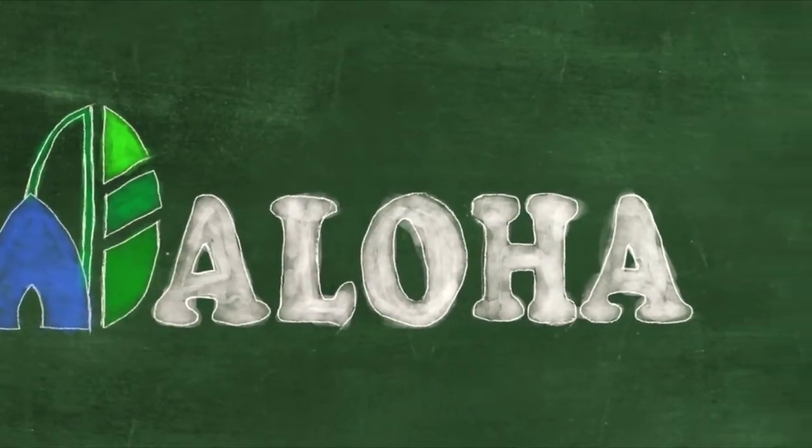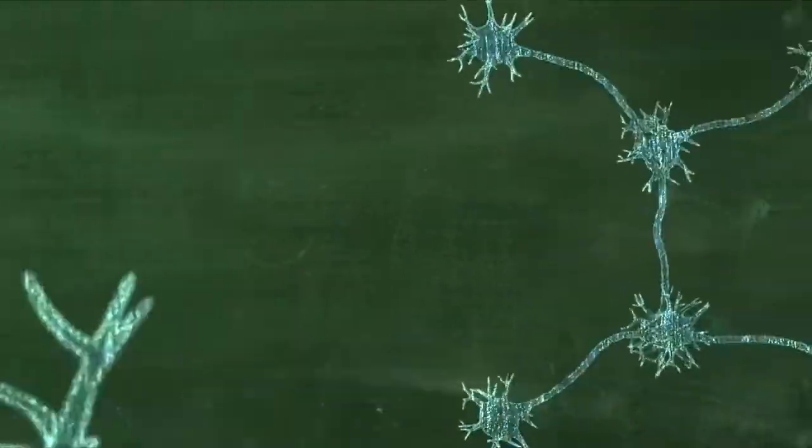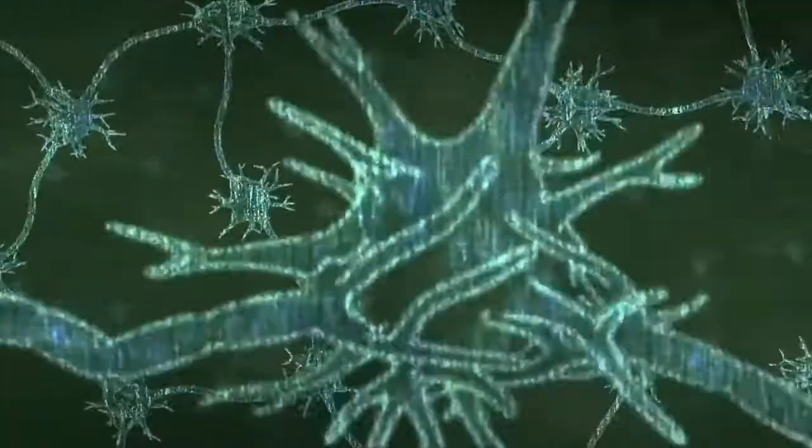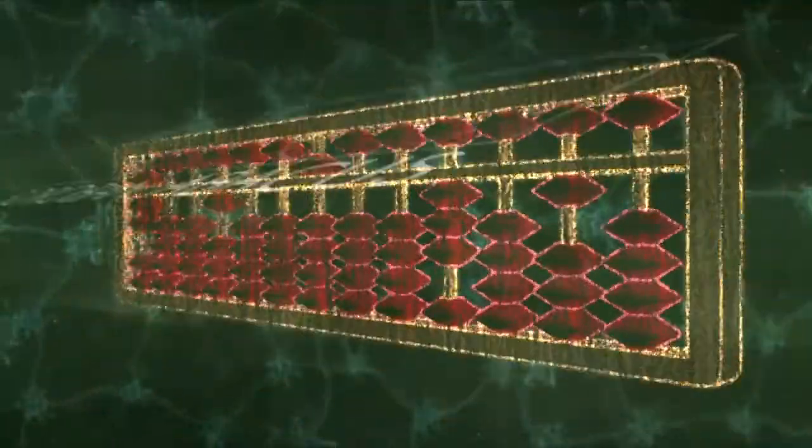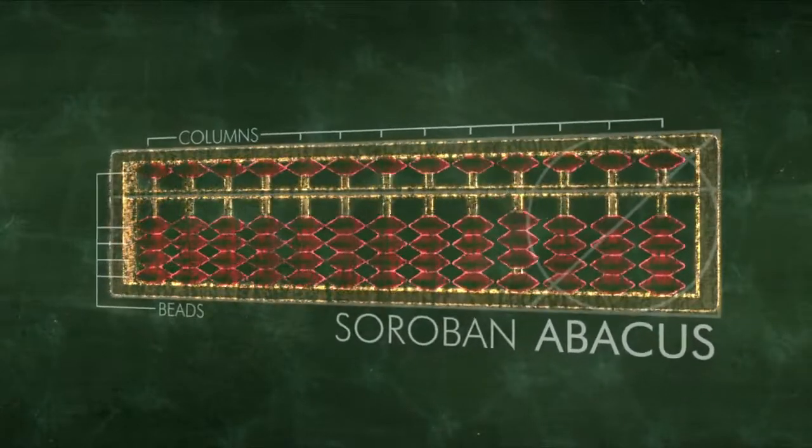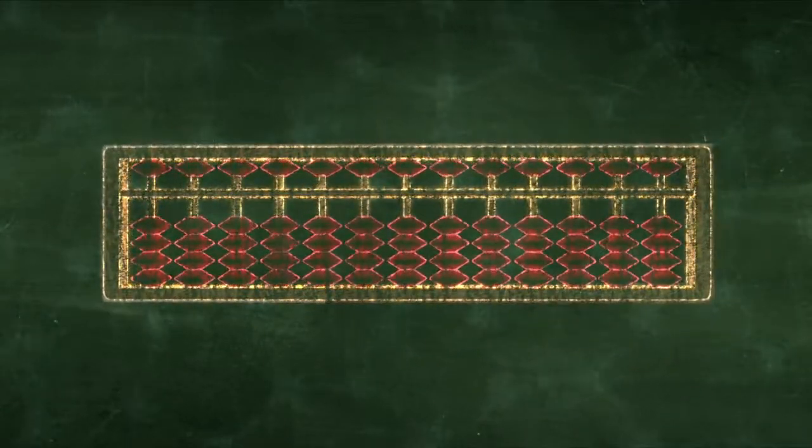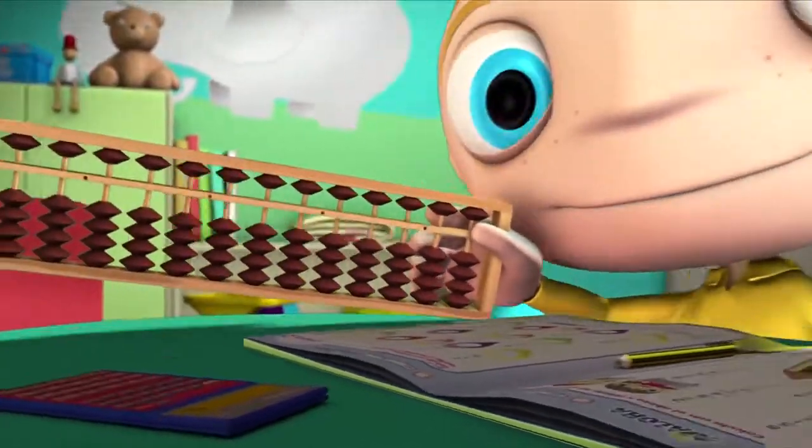The earliest calculating device ever known is the tool used by students in this program. This device consists of a rectangular structure with beads sliding on columns. At first, children learn to solve arithmetic operations by physically using the abacus.